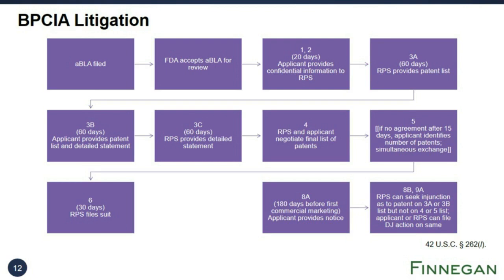The sponsor also must identify which of the patents, if any, it would be prepared to license to the applicant. Another 60 days later, under L(3)(B), the applicant provides a patent list and a detailed statement with its invalidity and non-infringement positions. The sponsor then provides its detailed statement of infringement and validity positions 60 days later under L(3)(C). Under L(4), the sponsor and applicant negotiate a final list of patents, and then the sponsor files suit within 30 days under L(6). If the sponsor and applicant do not agree on a final list after 15 days, then under L(5), the applicant identifies the number of patents for the suit and the parties simultaneously exchange a list of that many patents, and the sponsor then files suit within 30 days.